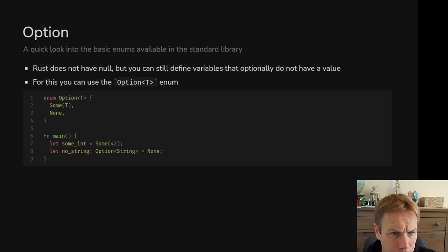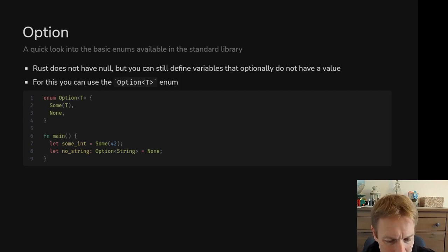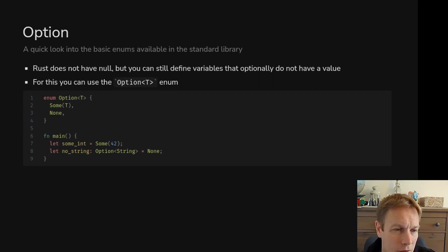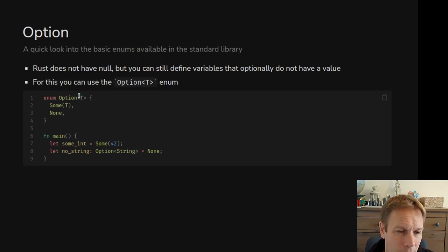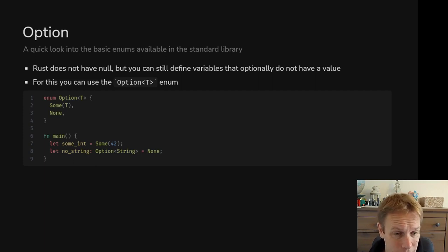There is an enum type in the standard library of Rust called Option, and this is one of my favorite things in Rust. In Rust, you don't have the possibility that just any old variable might be null like in other languages. Instead, if something might be present or not present, you have to be really explicit about it. Instead of saying 'I want to return a number,' you say 'I want to return an Option of number.' Option is generic over any type T, and it's either going to be Some(T) or None.